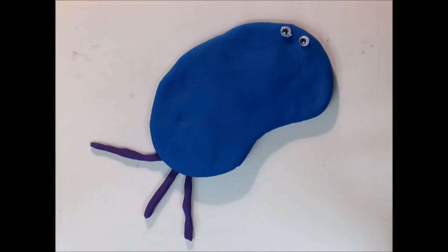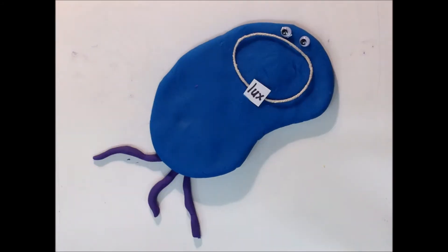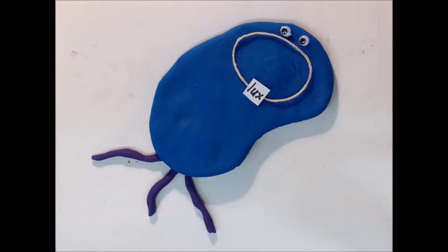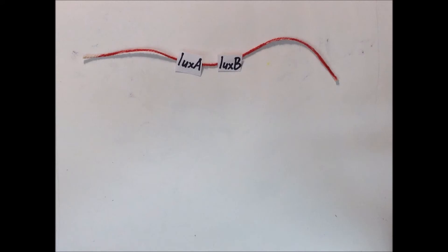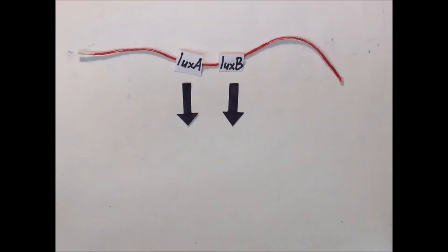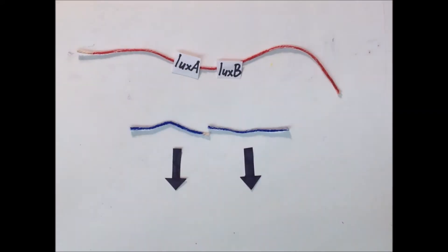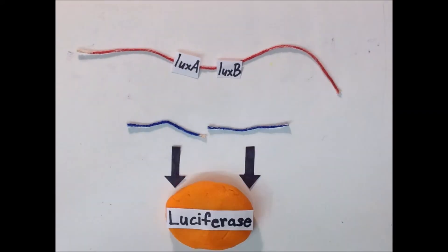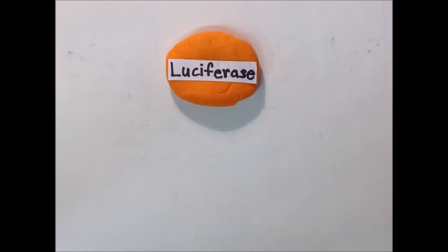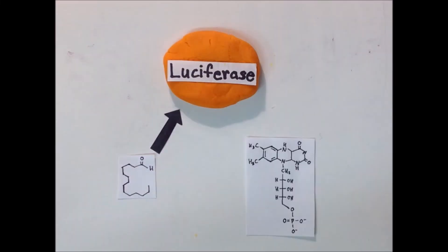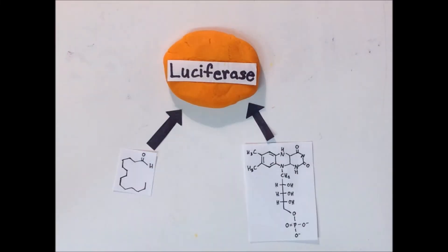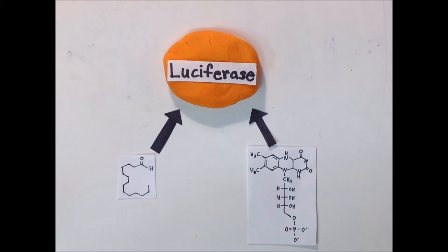Bioluminescence in Vibrio is controlled by the lux operon. Lux A and Lux B are part of the lux operon. They code for an enzyme called luciferase. Luciferase produces light by oxidizing long chain aldehydes and reduced flavin mononucleotides.